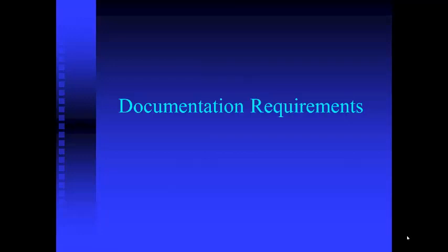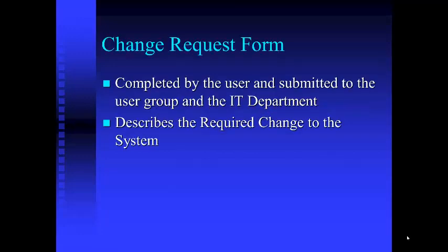Configuration management also has documentation requirements. If you have a controlled system, you have to have documentation so you know what changed and what's included in each release. One of these is the change request form, completed by the user and submitted to the user group and IT department. It should include the name of the user, date of request, priority of change on a 1-to-5 scale, approximate savings and cost benefit to the company, system area, and a detailed description of the change.